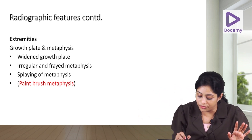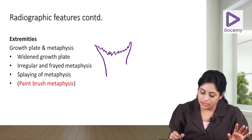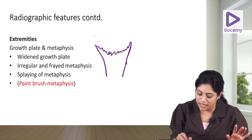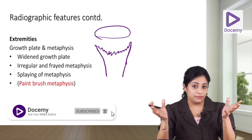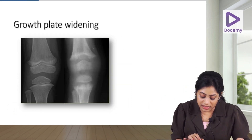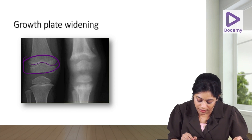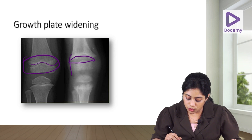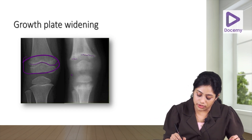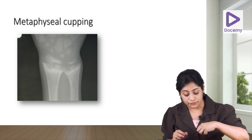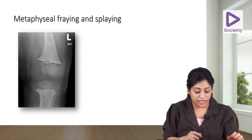Coming to the extremities: the growth plate will be widened and the metaphysis will be frayed and splayed, resulting in a paintbrush appearance of the metaphysis. In rickets, the growth plate is widened, the zone of calcification is lost, and there are ill-defined borders of the metaphysis. Due to pressure of the osteoid, the metaphysis becomes cup-shaped — this is cupping of the metaphysis, along with fraying and splaying.